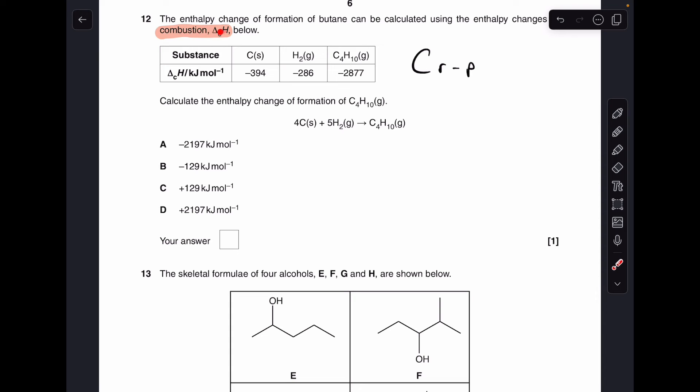Number 12. You can see I've highlighted combustion, delta Hc. So when you're calculating an enthalpy change from combustion values, it's reactants minus products. The sum of the enthalpy changes of combustion of the reactants minus the sum of the enthalpy changes of combustion of the products. So there's all the numbers. And when you put them in your calculator, you should get minus 129, which is option B.